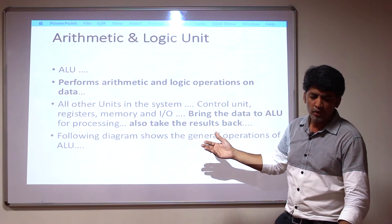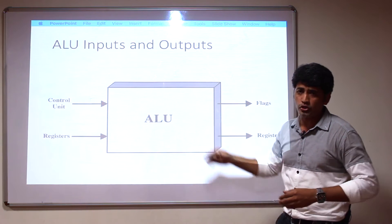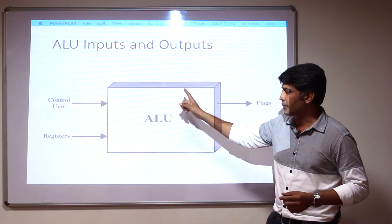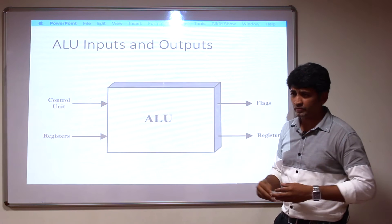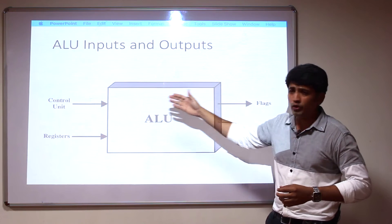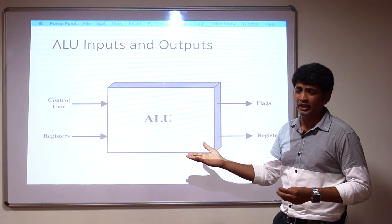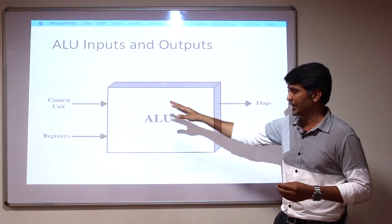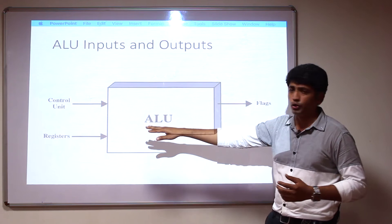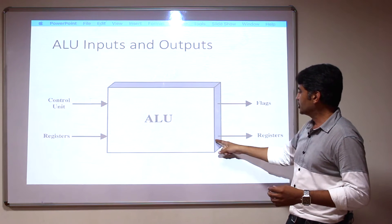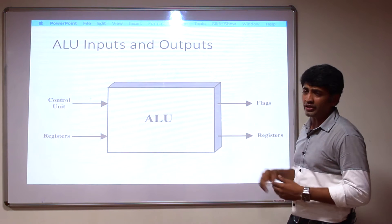The next slide shows the ALU diagram. The inputs to the arithmetic and logic unit are: first, inputs from the control unit, and second, inputs from the registers. Values will be coming from the registers and control signals will be coming from the control unit when an operation needs to be performed. The output will go back to the registers.